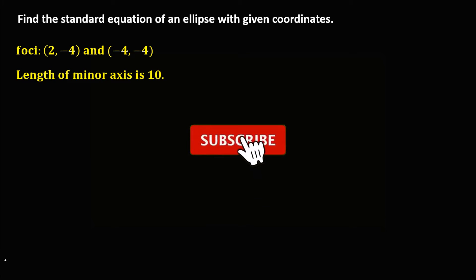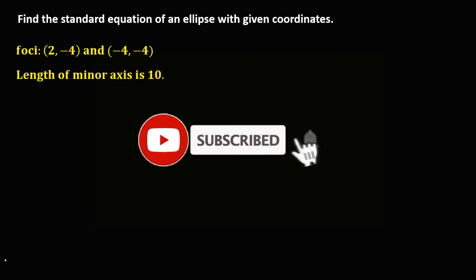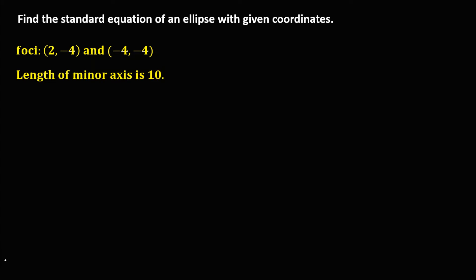Okay, so let's solve this problem. Find the standard equation of an ellipse with the given coordinates — specifically the foci and the length of the minor axis.